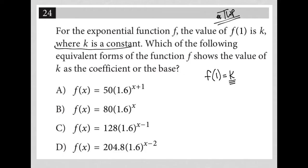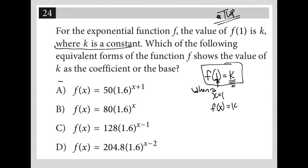All I know is when x equals 1, f(x) equals k. I'm replacing x with 1 and the answer I get is k. So I go to my answer choices and I want to see where I can get that scenario where I only get a single constant term by plugging 1 in for x, and that k is a coefficient or base — meaning the value I get for f(x) is listed in the function.